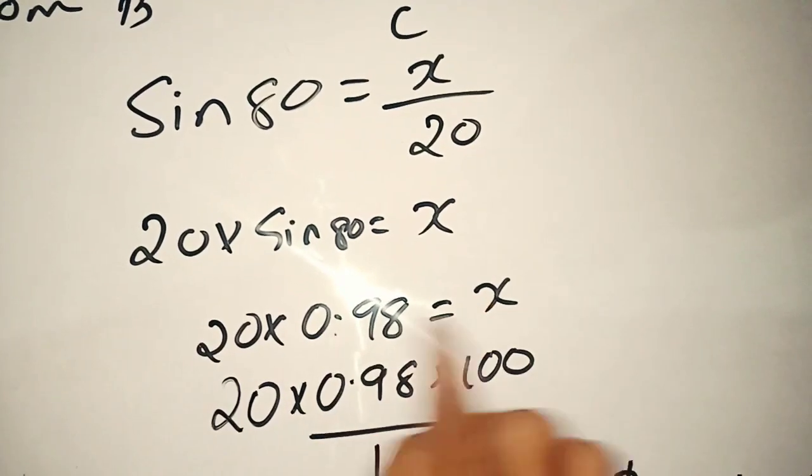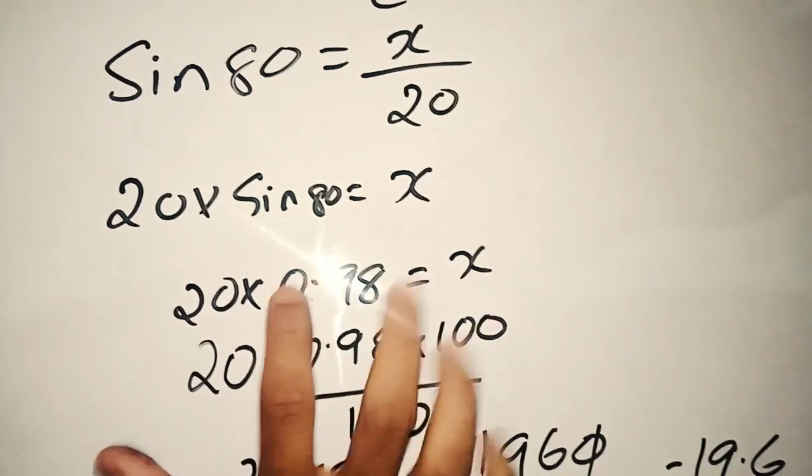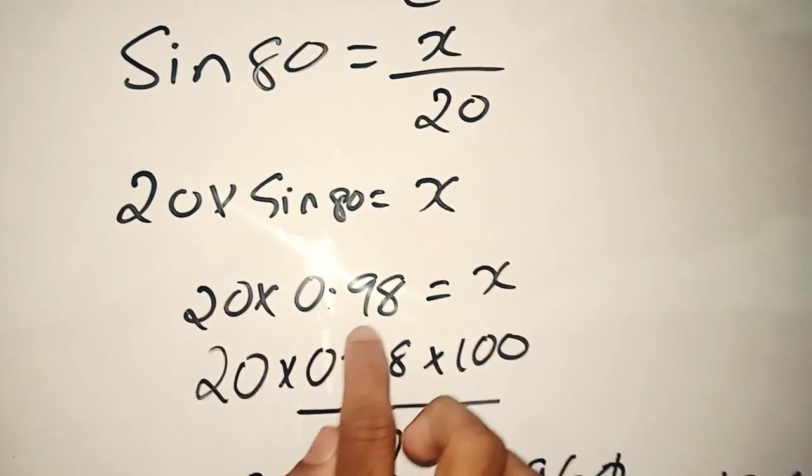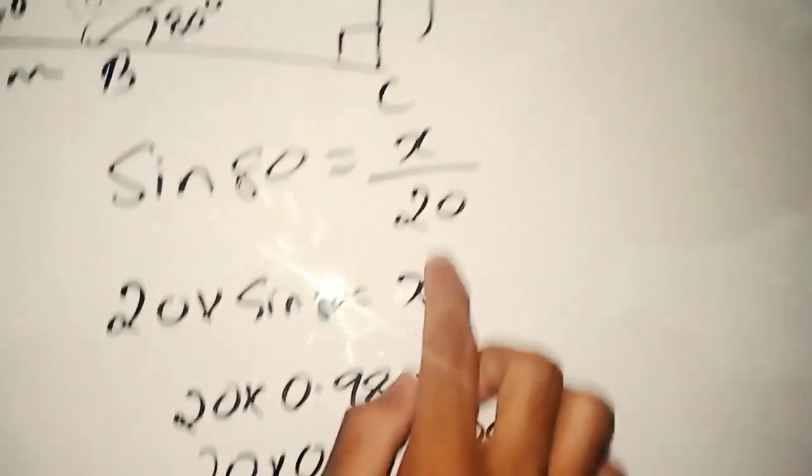That's 20 times sin 80, which equals 20 times 0.98. If we calculate this out, we get the answer.